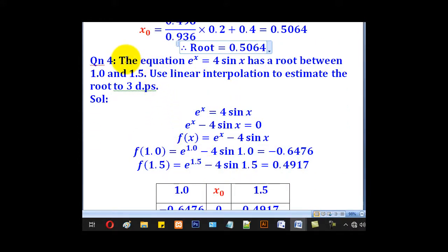Problem 3: The equation e^x = 4 sin x has a root between 1 and 1.5. Use linear interpolation to estimate the root to three decimal places. Do the same: first bring everything on one side and call that your f(x). After that, get the corresponding f(x) values for 1 and 1.5.